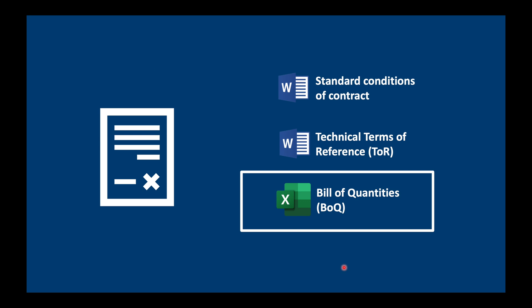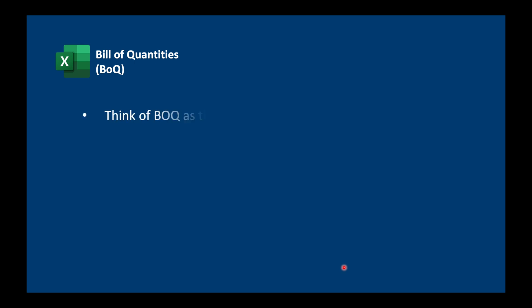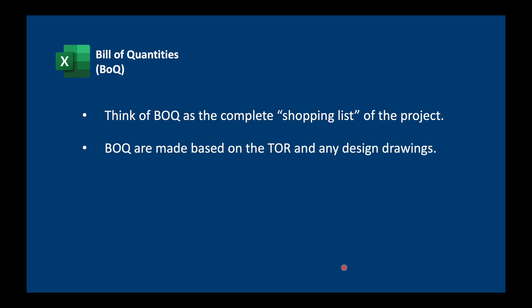Now let's have a look at the Bill of Quantities. The Bill of Quantities is a list of all the materials, parts, and labor — and the associated costs — required to complete a project. Quantities may be measured as units of lump sum, number, area, volume, weight, or time. Think of the BOQ as a complete shopping list of the project. The BOQ is made based on the terms of reference and any design drawings, and is very useful before, during, and after construction.